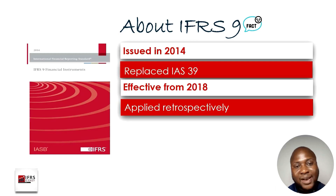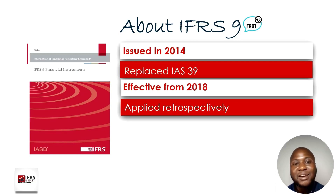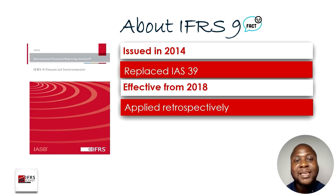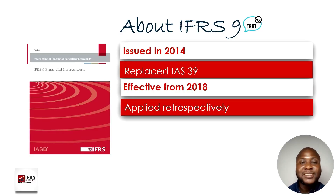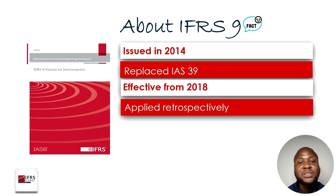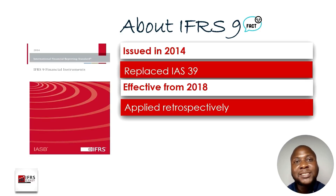Applied retrospectively means that companies that used to prepare financials using IAS 39 had to go back as far as possible to restate their financials in order to align with IFRS 9, so that the comparative financial statement in 2019 would align with that of year 2018. That's pretty much what happened when IFRS 9 came into play in 2018.